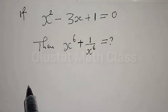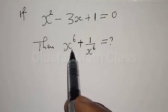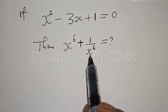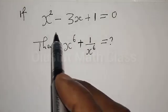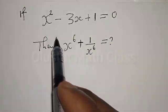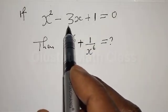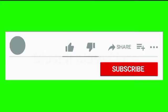Hi everyone, welcome to my class. In this class, we want to look at how we can find the value of x raised to power 6 plus 1 over x raised to power 6, from the given equation x squared minus 3x plus 1 equal to 0.